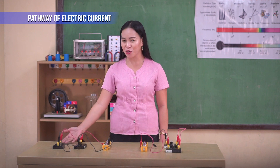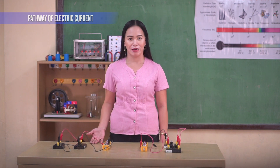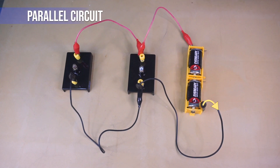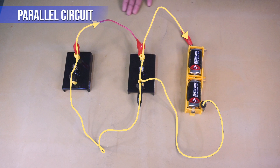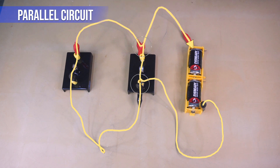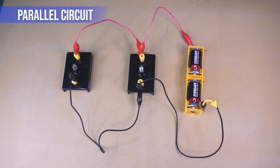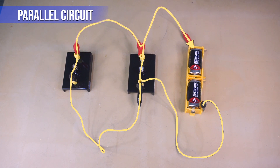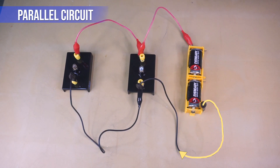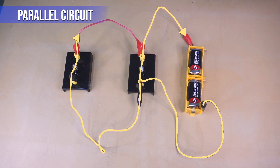In a parallel circuit, the end of each of the resistors or loads has a common point or connection, and the other ends are also connected to a common point. In this connection, current flows in more than one path.